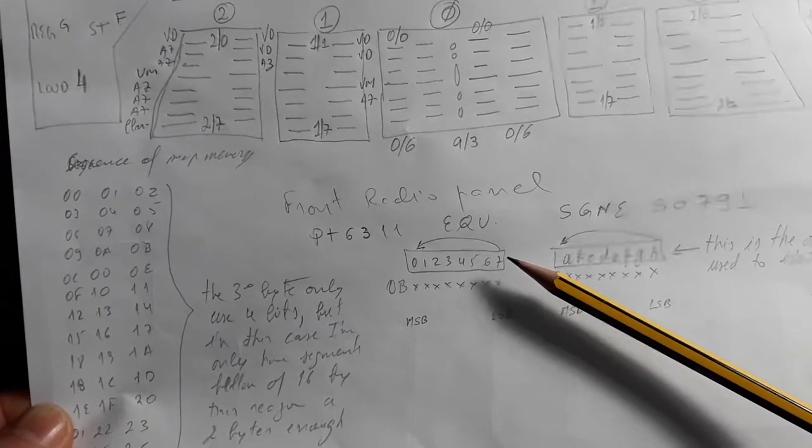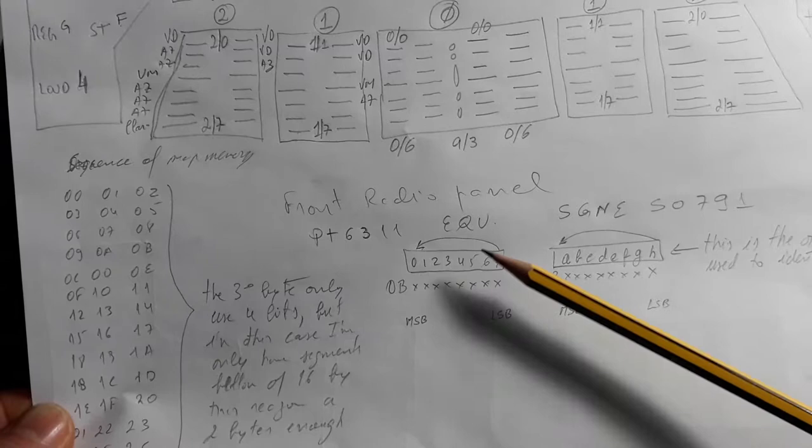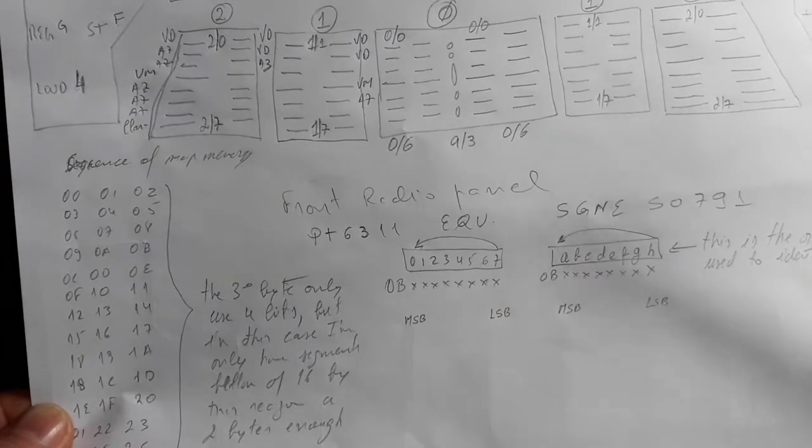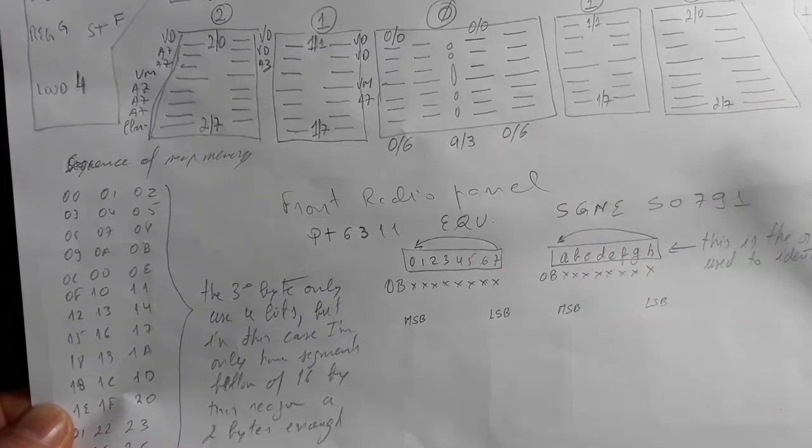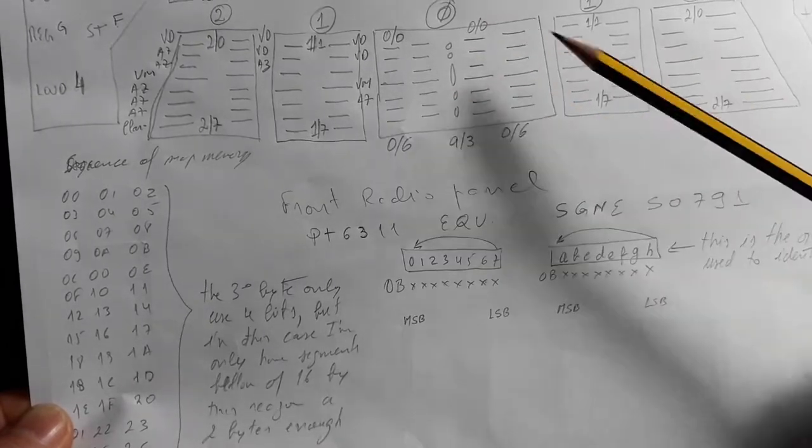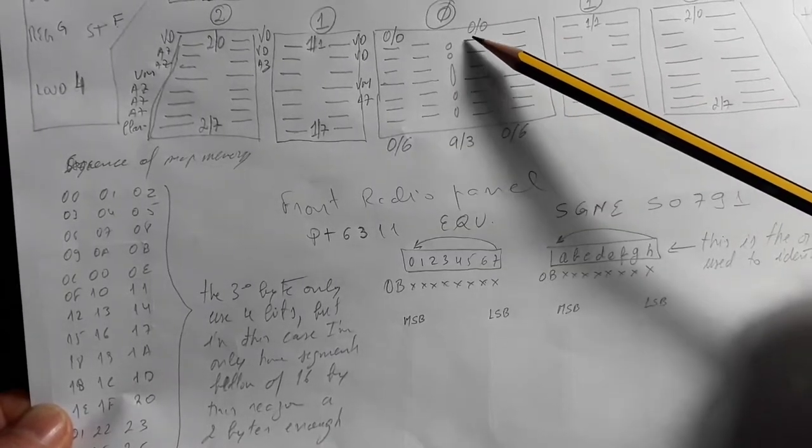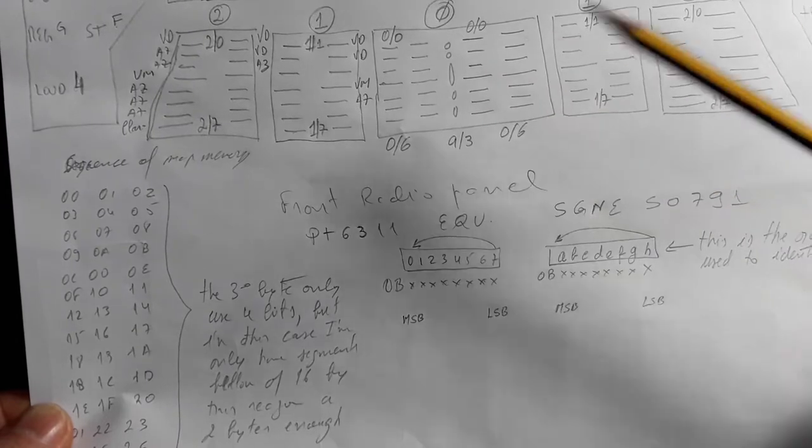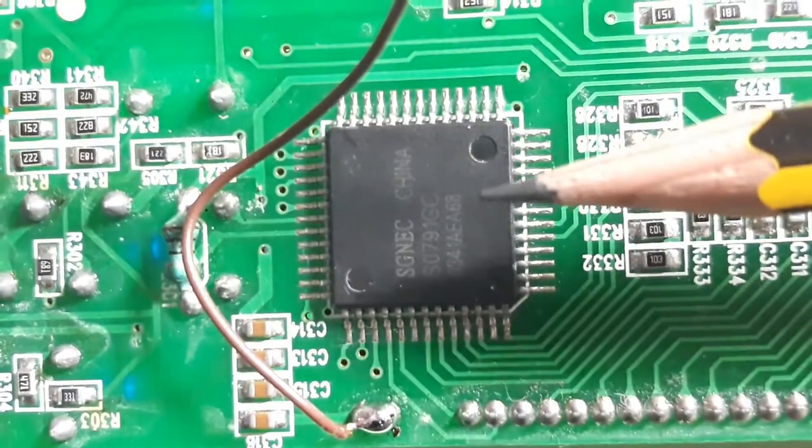But this doesn't matter because when you change the bit in the code, you can identify what is being brought up - if it's this or this.